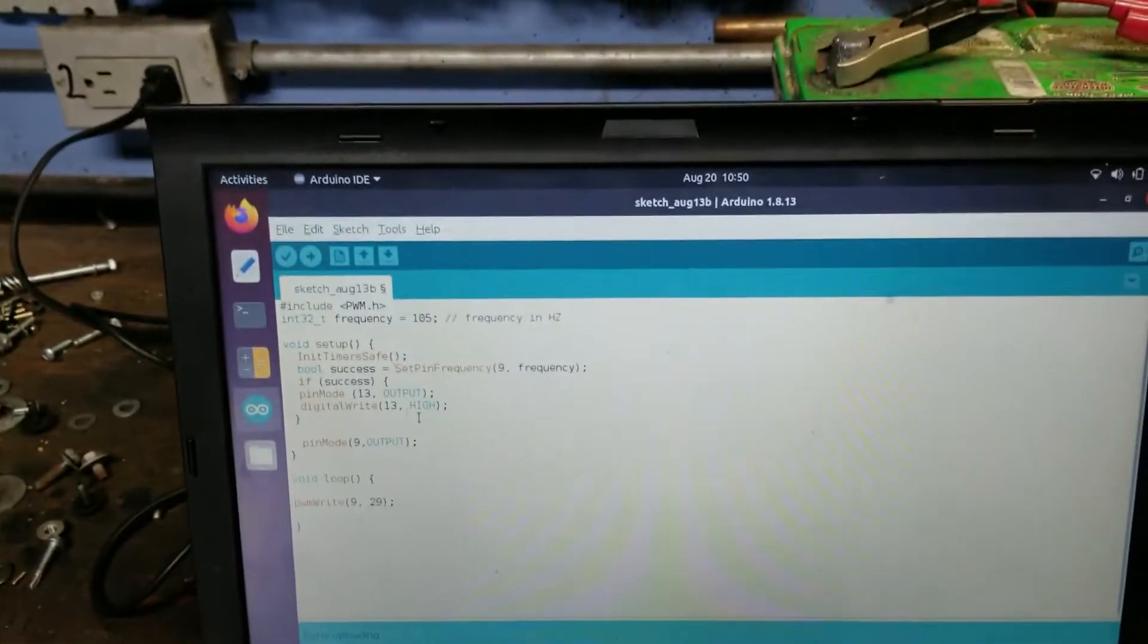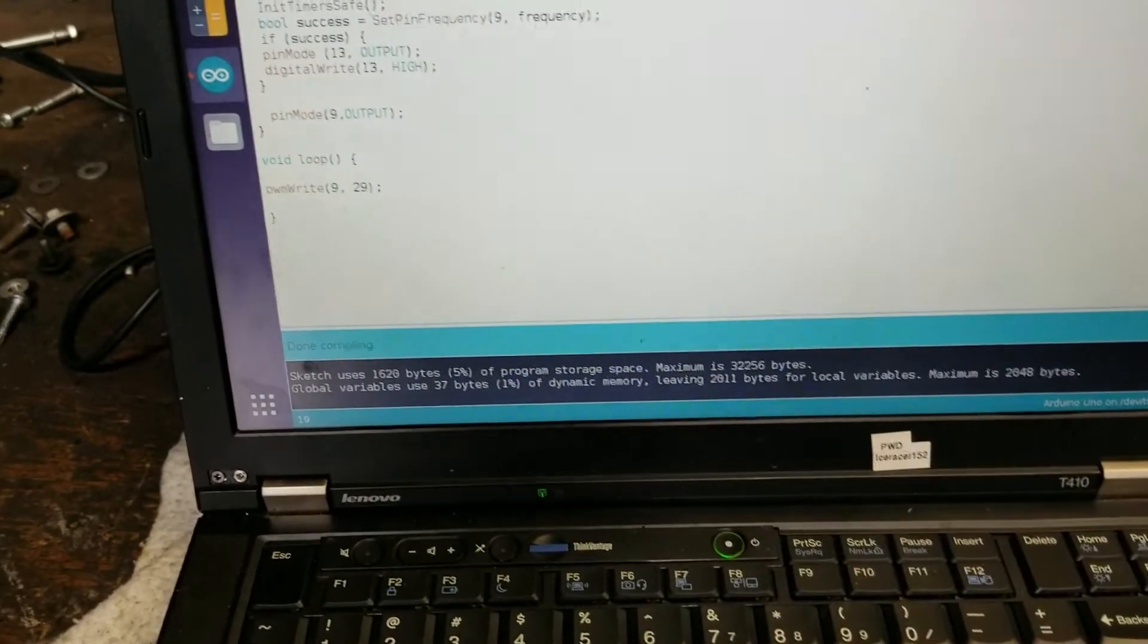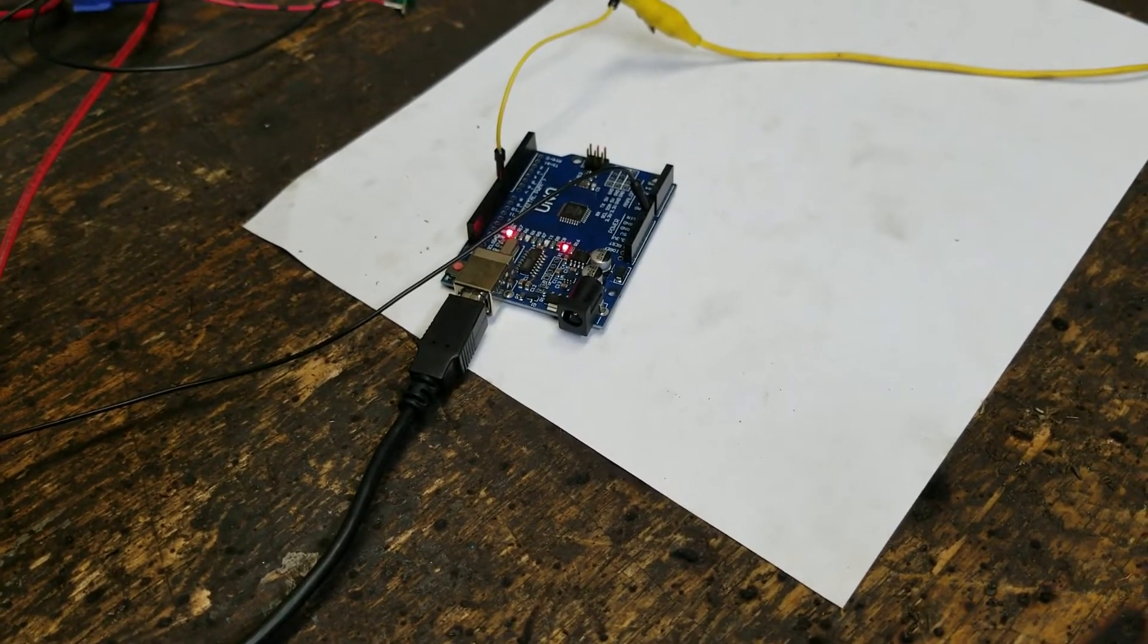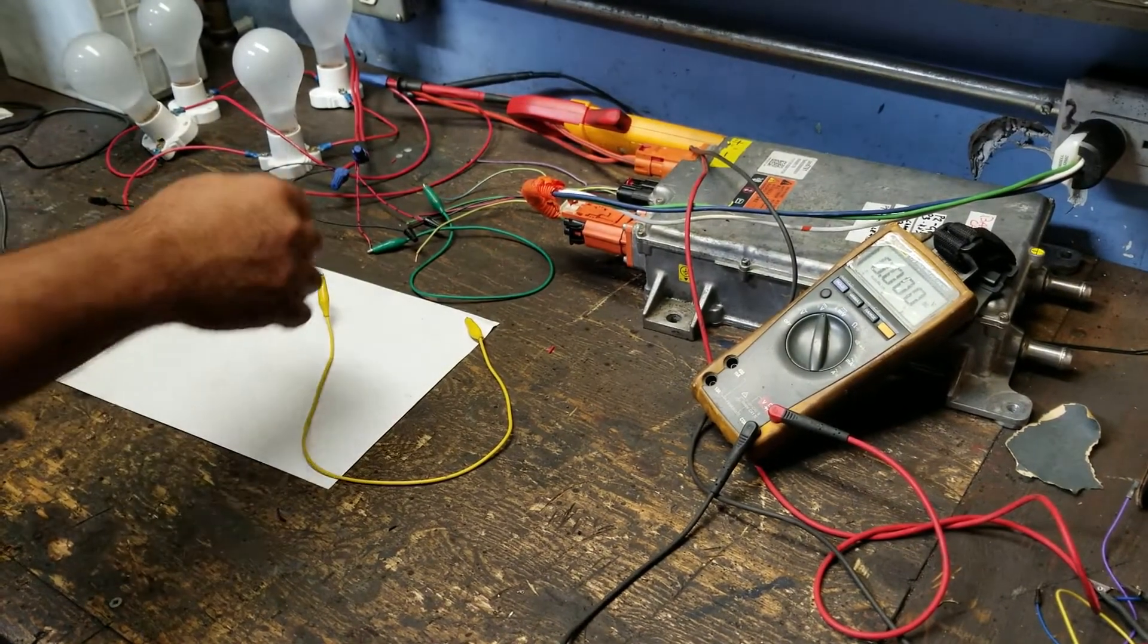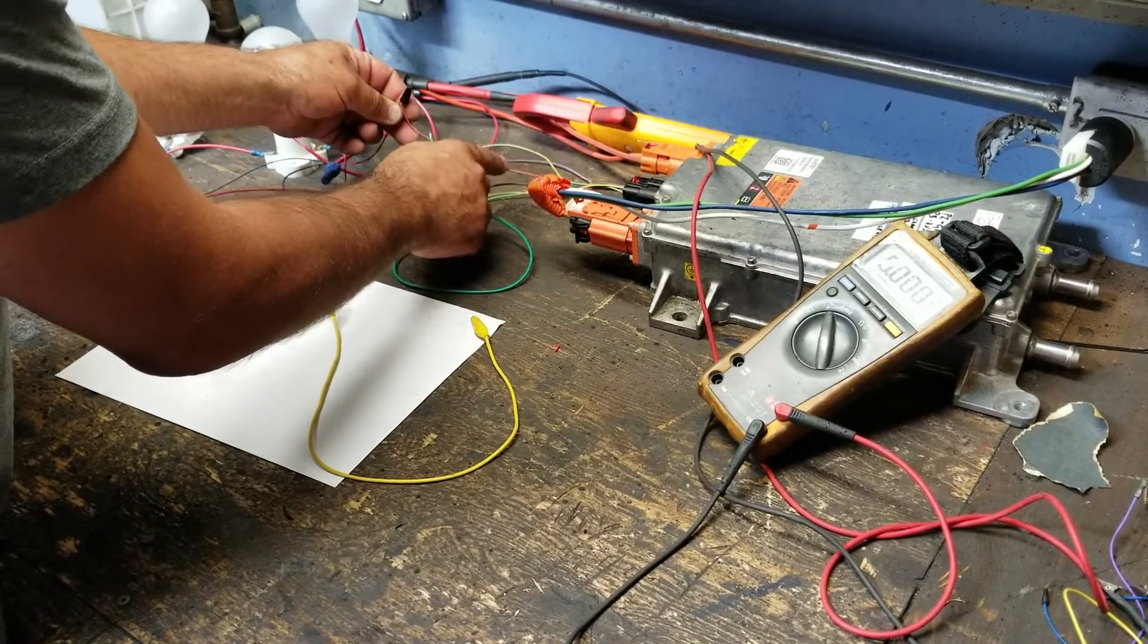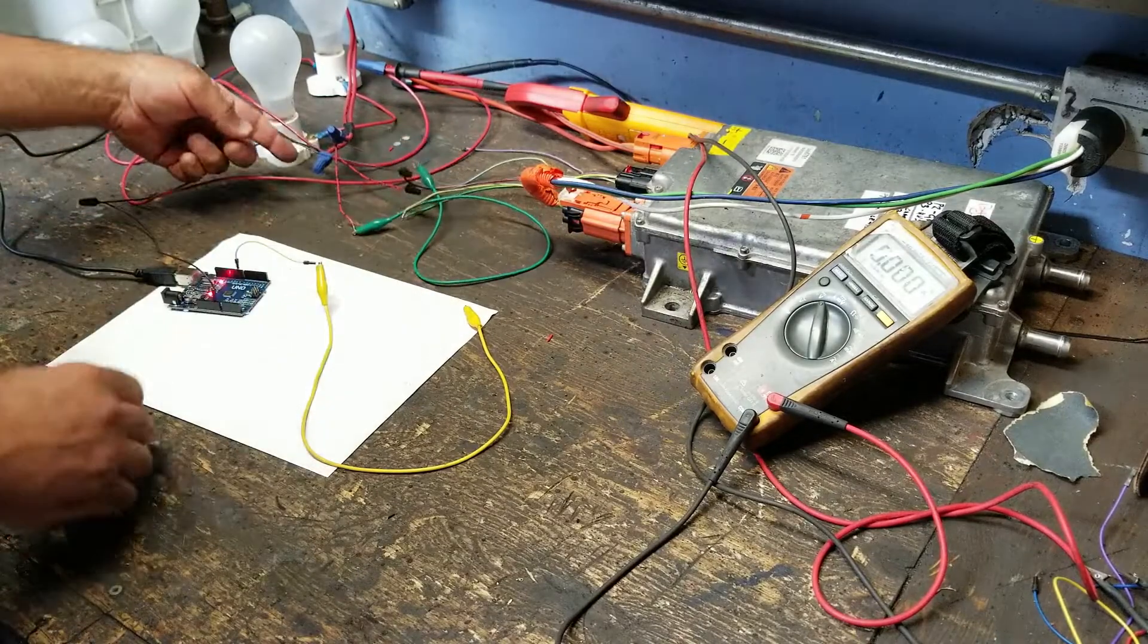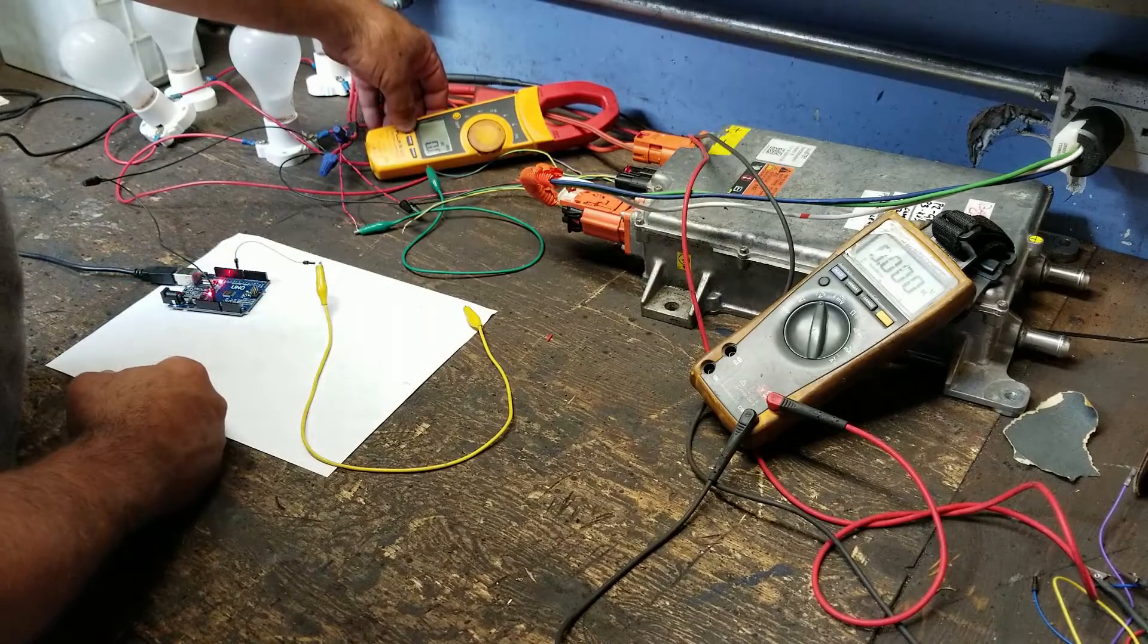I've already done that but I'll do it again. All we do here is first we verify that everything's good, and if there's no brown lettering down here you're good. I'm gonna upload it again. It's a small program, see those flashing lights, we're good and there's no errors.